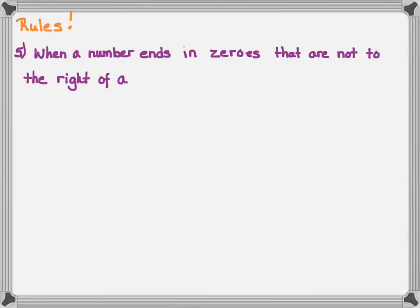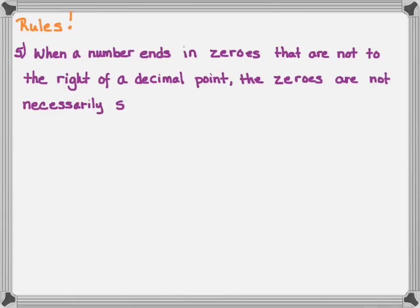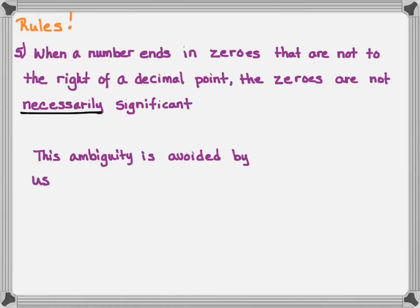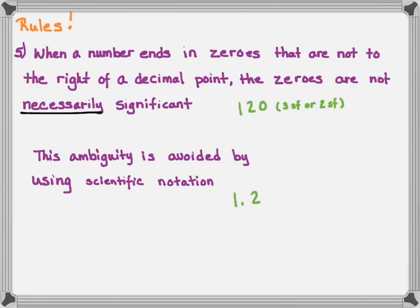Rule five: when a number ends in zeros that are not to the right of a decimal point, the zeros are not necessarily significant — we're not sure whether it's significant or just a placeholder. So the number 120: is that zero significant or not? We either have three significant figures (1, 2, and 0) or two (1 and 2, with 0 as a placeholder). To avoid this ambiguity, we write numbers in scientific notation. So 120 written as 1.20 × 10² indicates three significant figures, because the trailing zero after the decimal is significant.